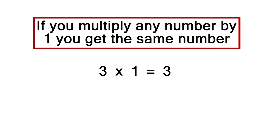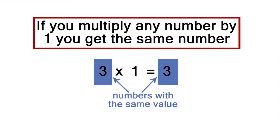For example, 3 times 1 equals 3. We get a number with exactly the same value. By the same reasoning, 5 eighths has the same value as 50 eightieths.